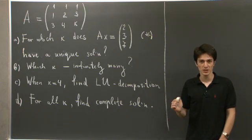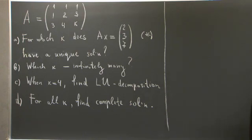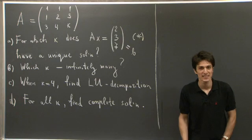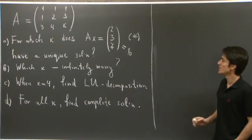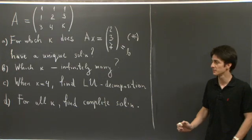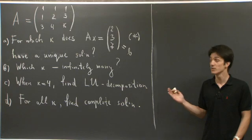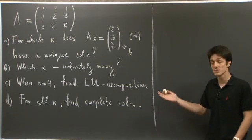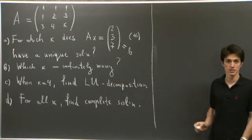So I'll give you a few minutes to work this problem on your own, and then please come back and see how I do it. All right, welcome back. So let's start with part A. For which k does this system, Ax equal to 237, have a unique solution? So what do we know about square systems of linear equations? They have a unique solution when the matrix A is invertible.